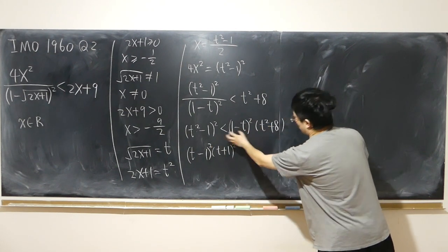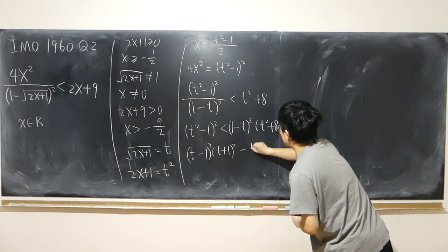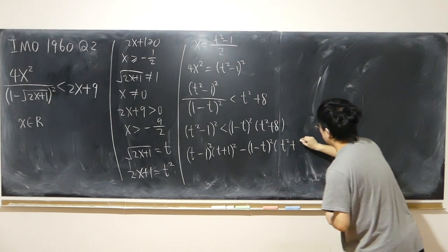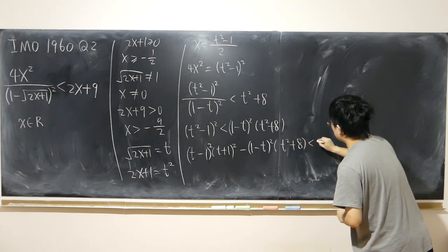And move this to the left hand side. So t minus 1 minus t quantity squared times t squared plus 8, less than 0.